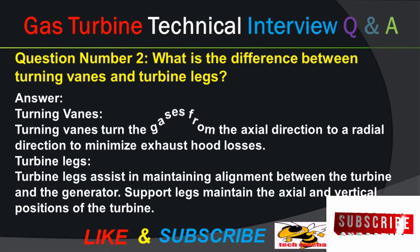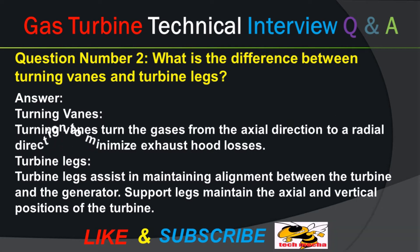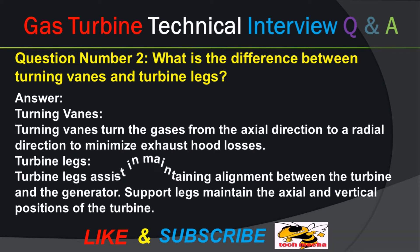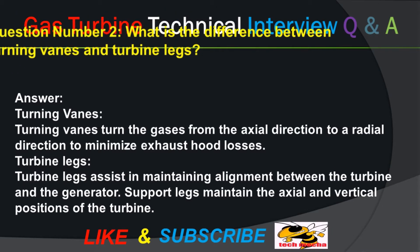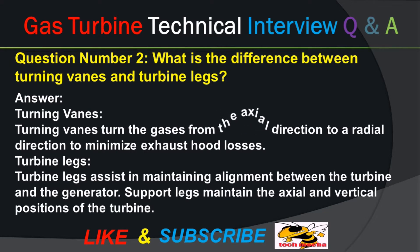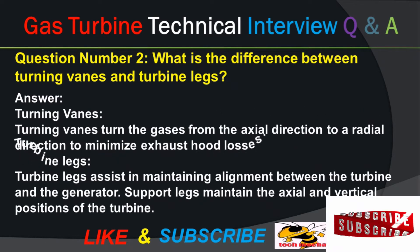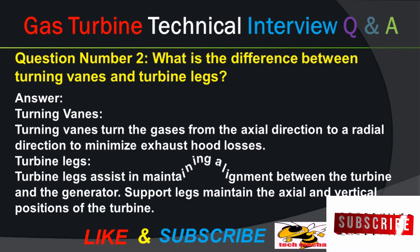Question number two: what is the difference between turning vanes and turbine legs? Answer: turning vanes turn the gases from the axial direction to a radial direction to minimize exhaust hood losses. Turbine legs assist in maintaining alignment between the turbine and the generator; support legs maintain the axial and vertical positions of the turbine.